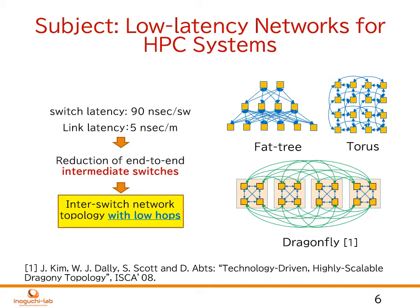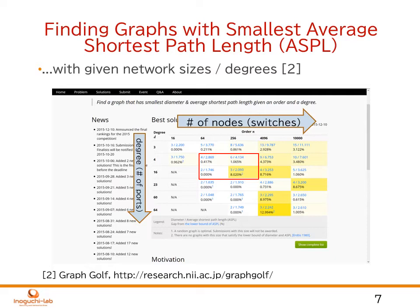Conventionally, high-performance computing system designers consider the required system performance and scalability and adopt widely used FAT tree topology, TORUS, or Dragonfly for inter-switch network topologies. We can use a more drastic way to reduce the latency by solving the degree-diameter problem to find the network topology for an arbitrary network size with a small number of hops.